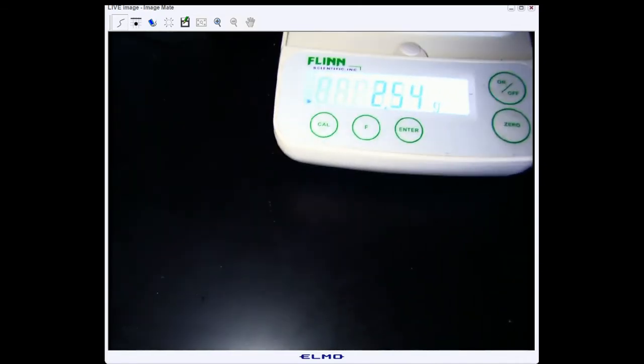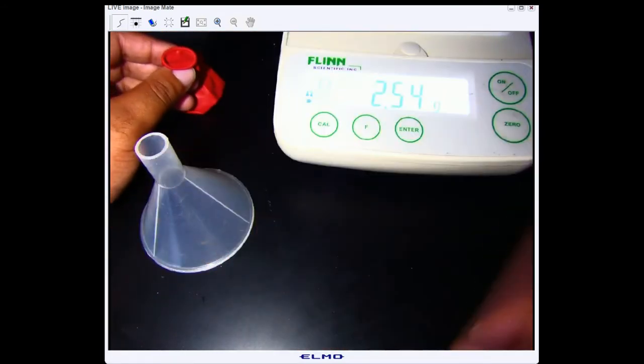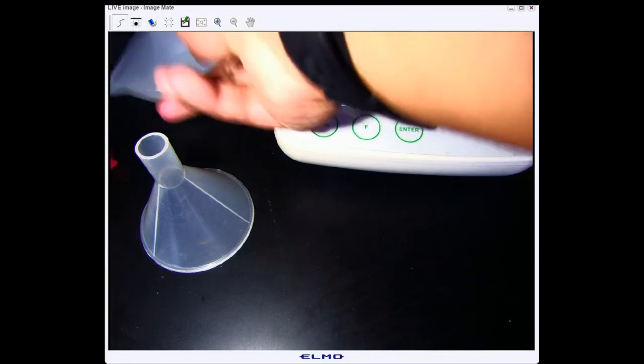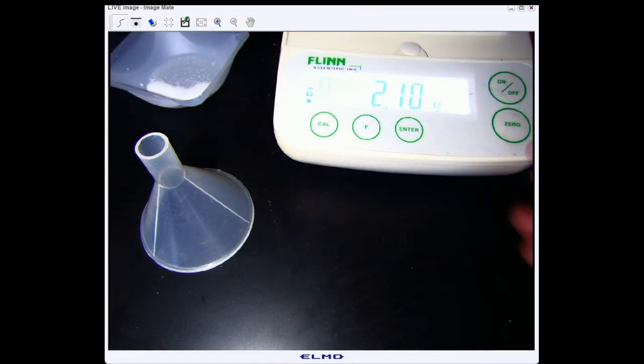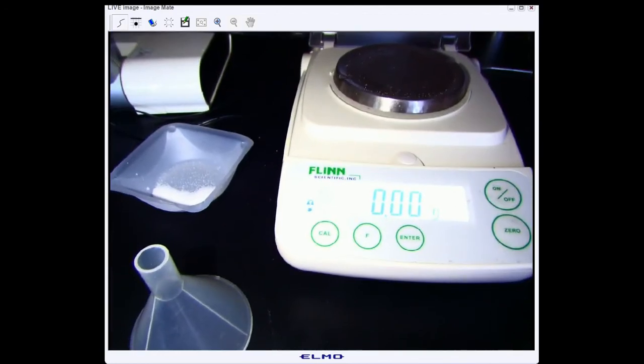Now we need to transfer our baking soda into our balloon. I'm going to take my balloon. Oh, I missed a step. We need to get the mass of the balloon. So we're going to remove our baking soda, re-zero the balance, and place our empty balloon on there and record the mass.